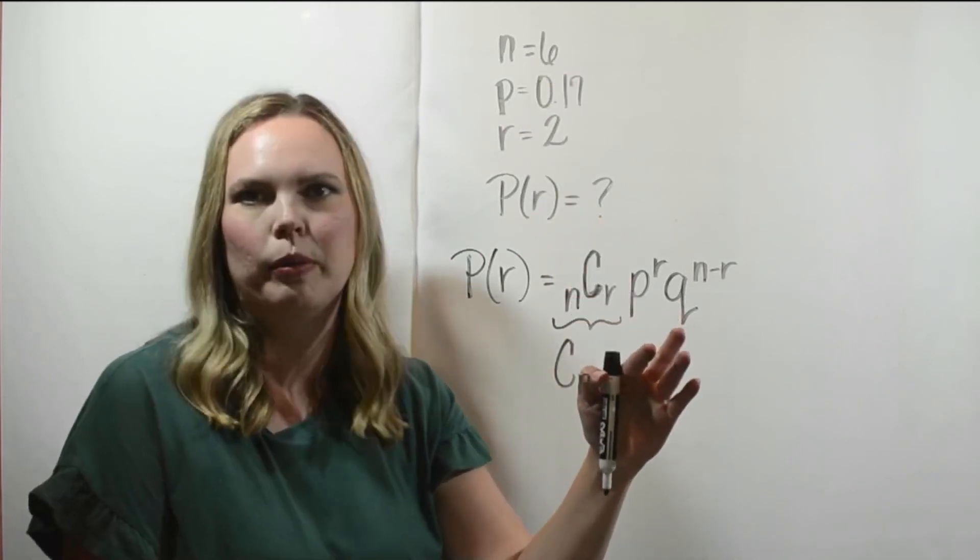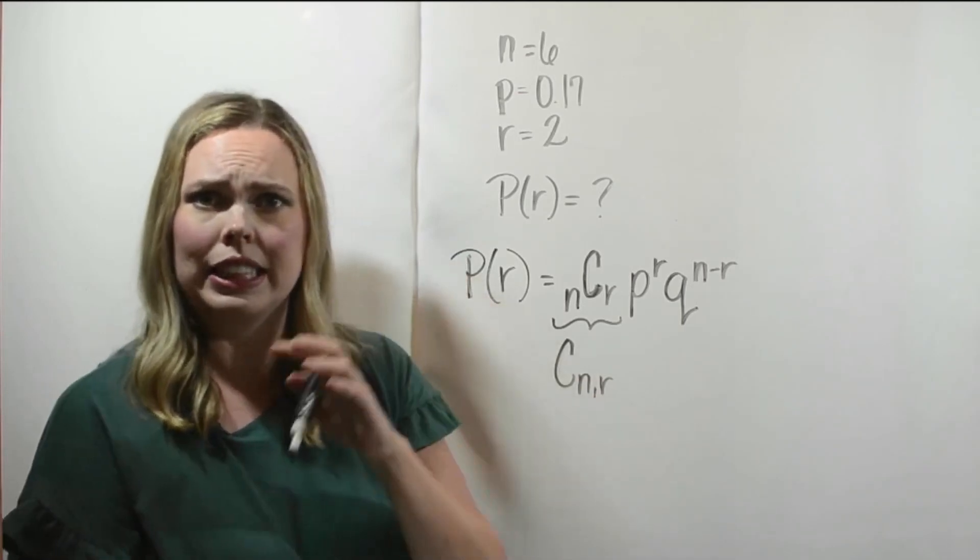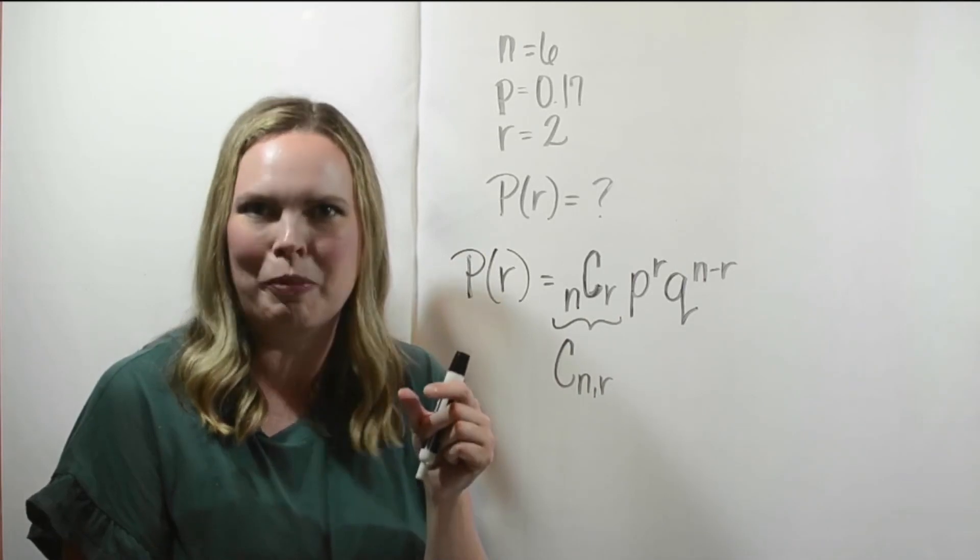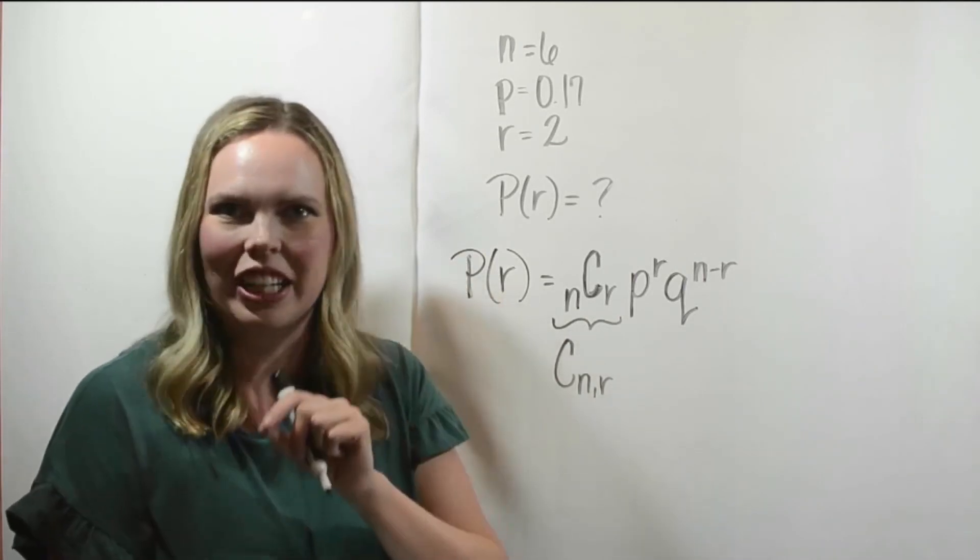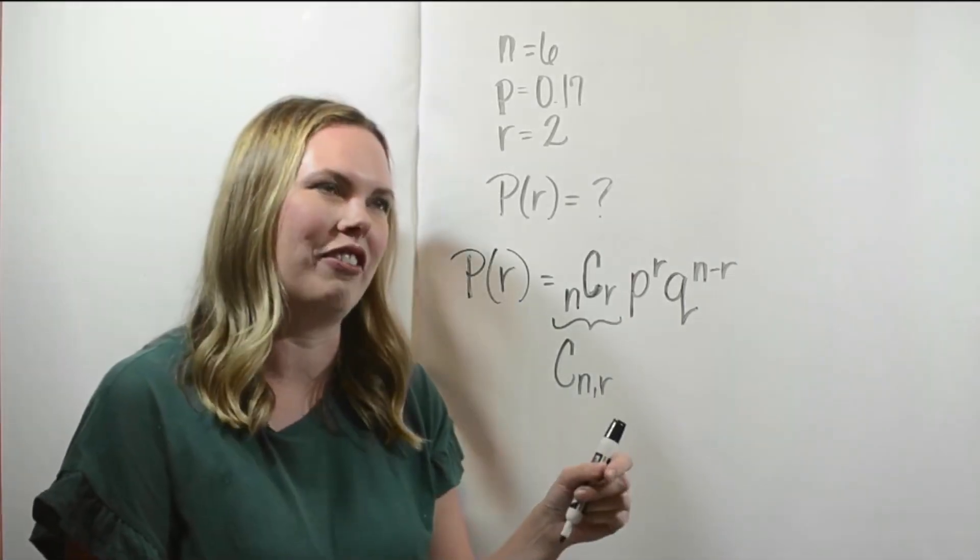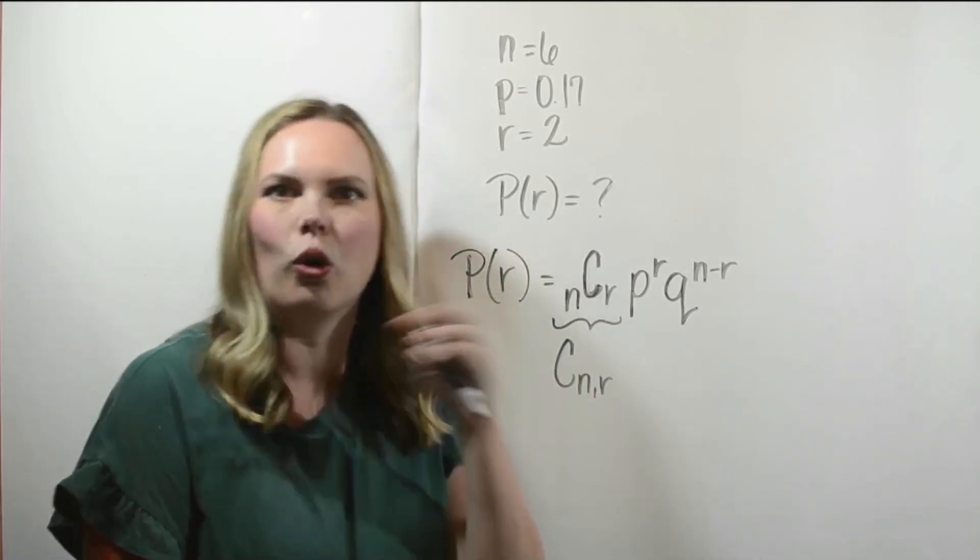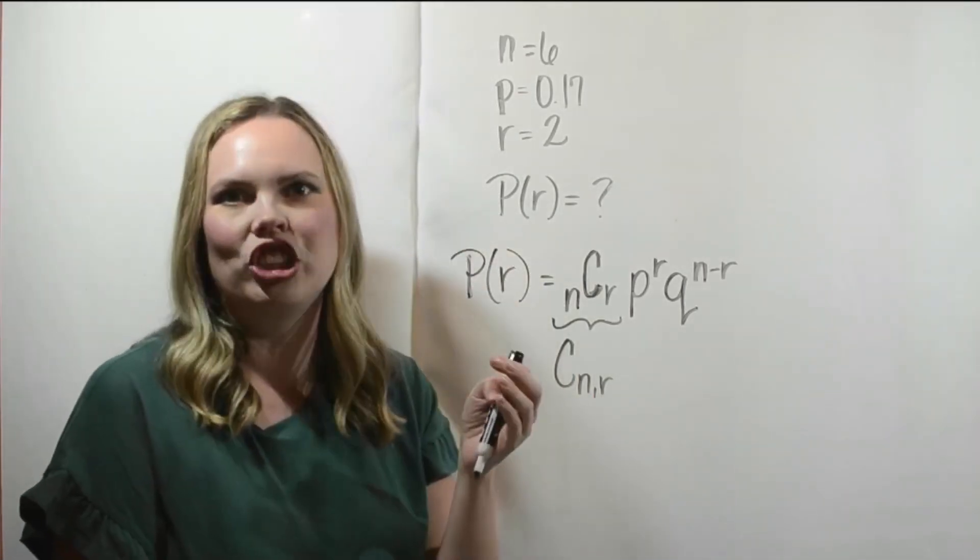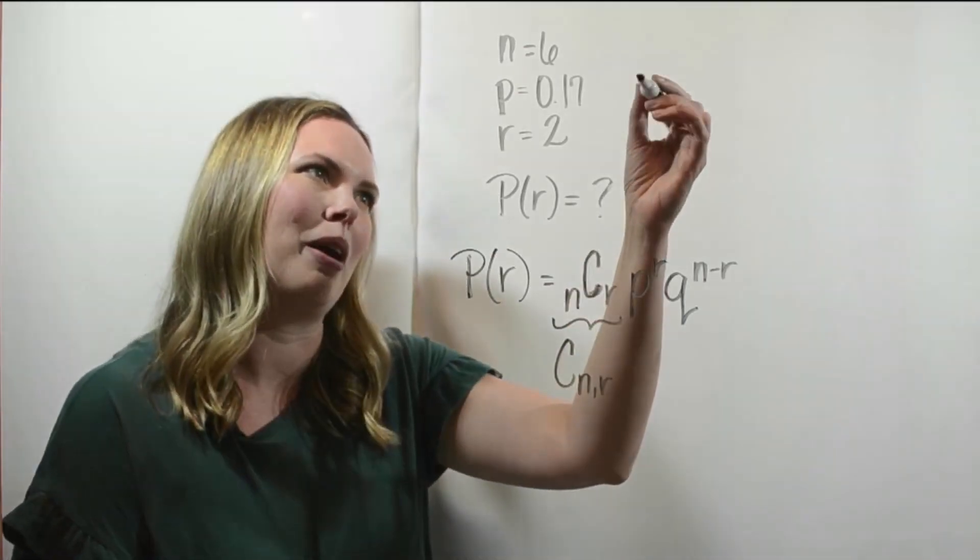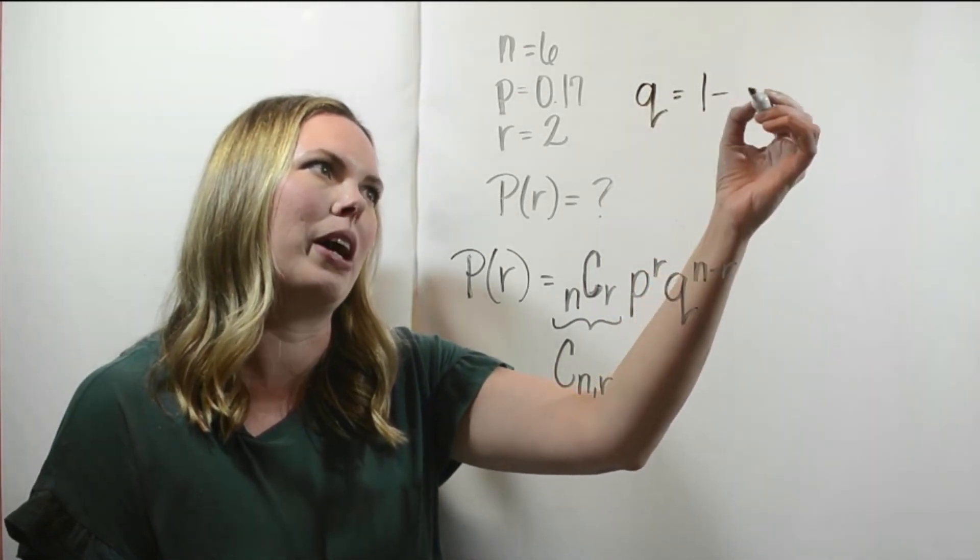And then Q, which we haven't been given, it is the probability of a failure. In a binomial, you either have a success or a failure. That is the why we use that prefix of bi for two. It's a two outcome experiment. It's either a success or it's a failure. And so P and Q are going to cover that sample space. Either you have a success or you have a failure. And so they should add to one. They're complements of each other, which we've talked about in probability.